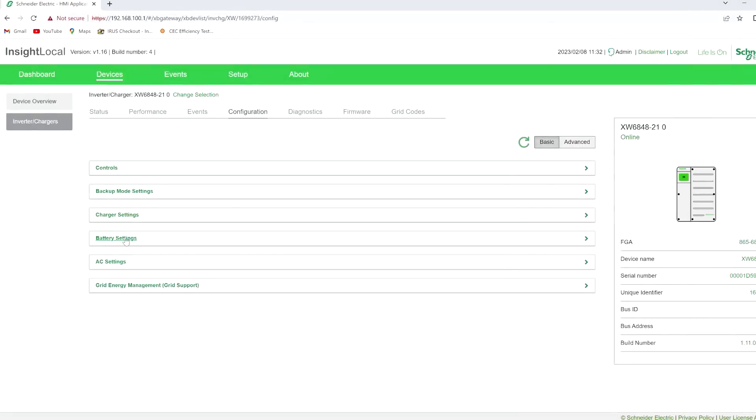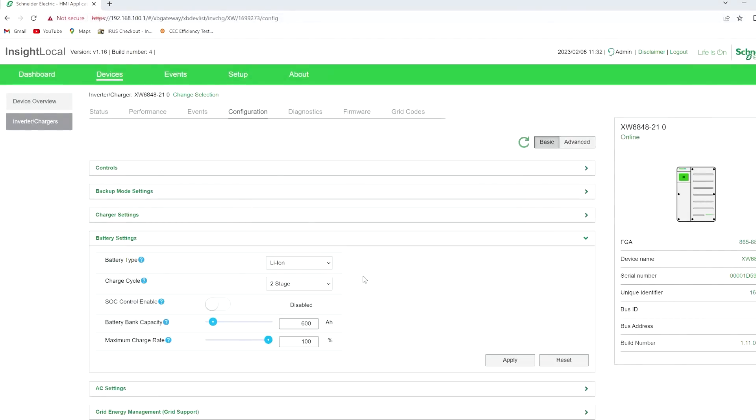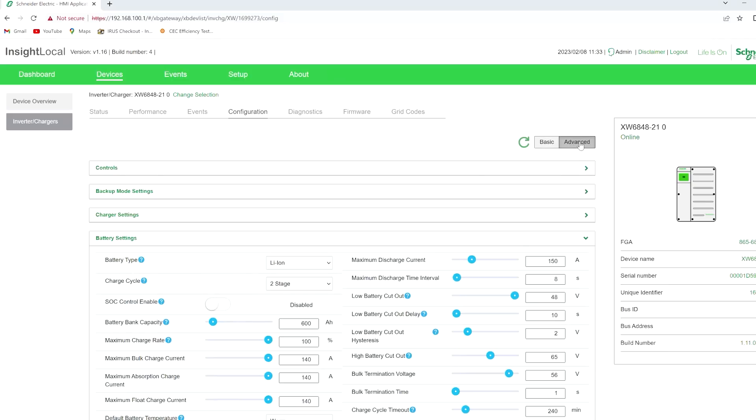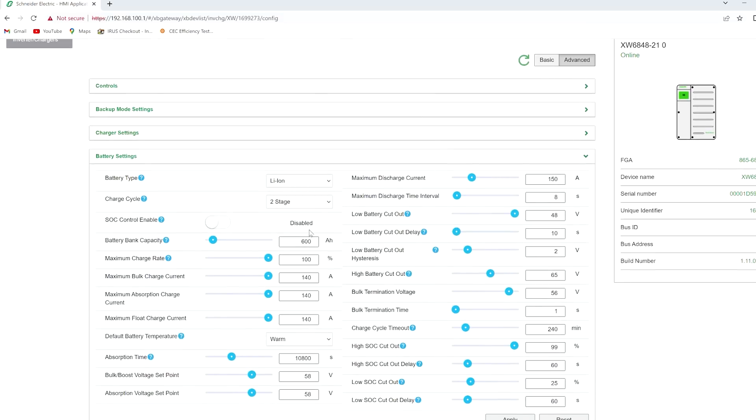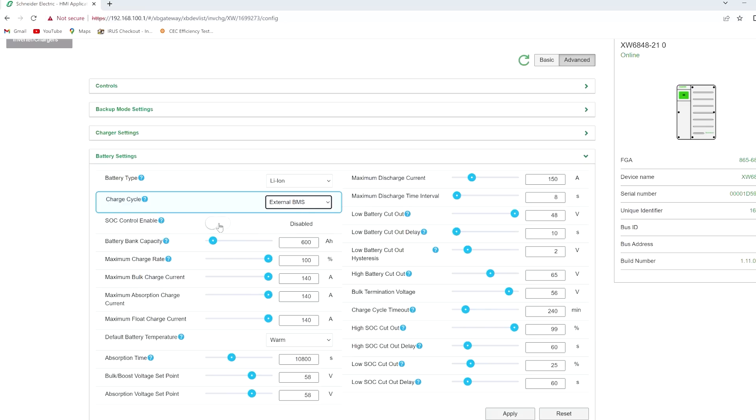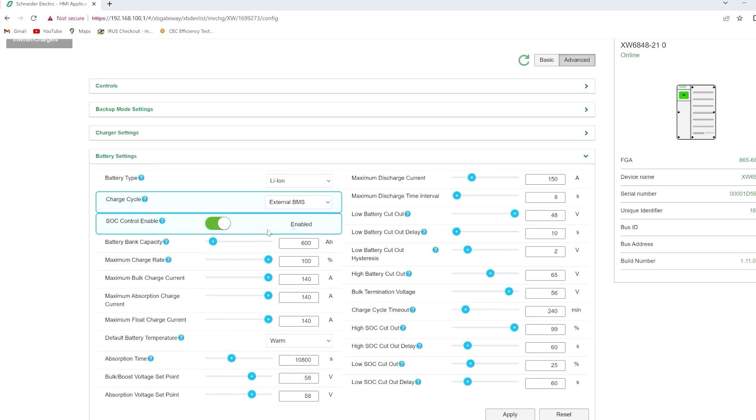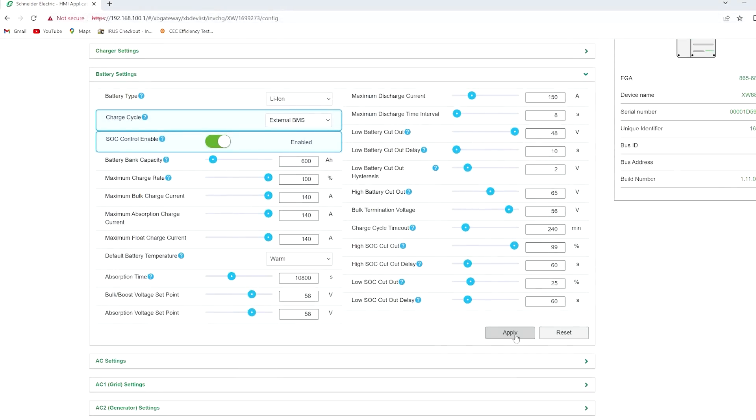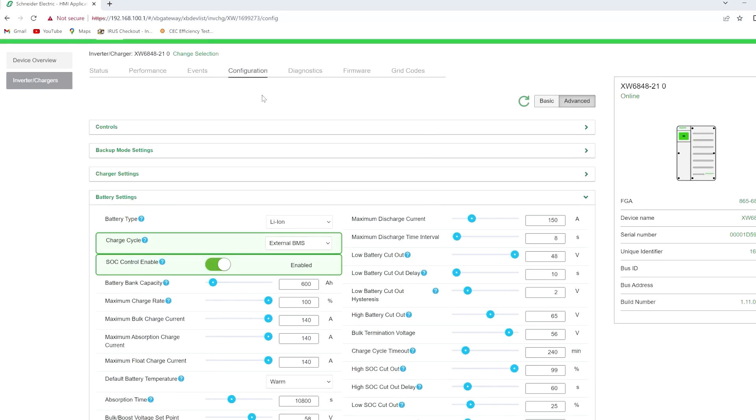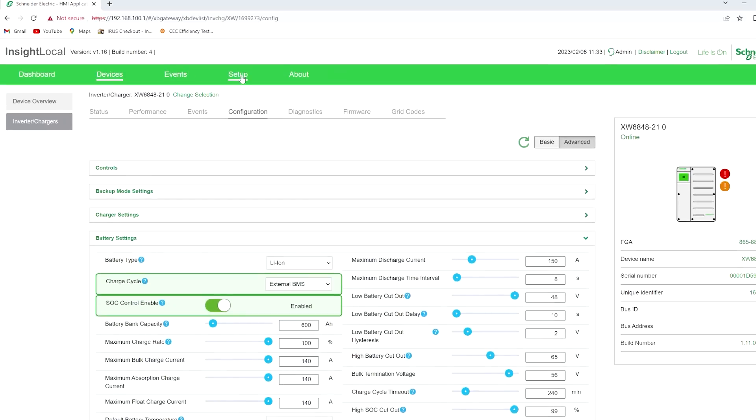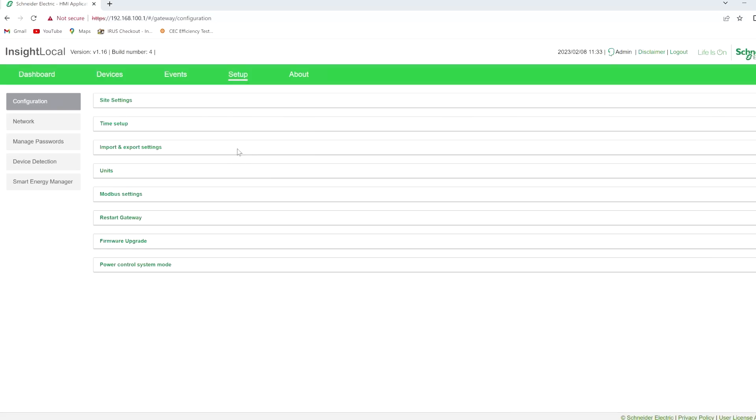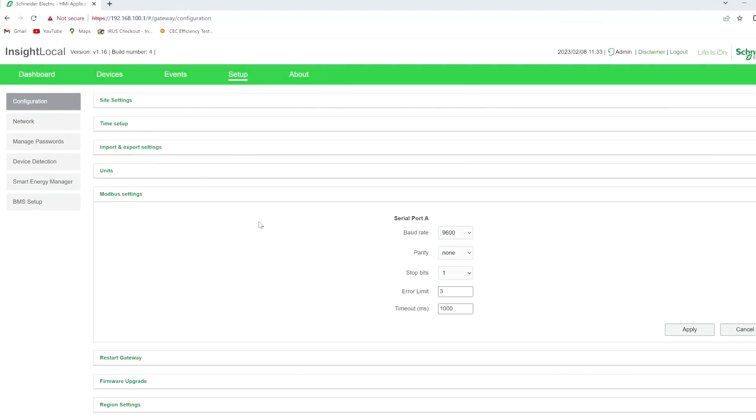We'll hit configuration. Now we need to set up the battery settings, but we don't have the ability to set up. I don't know if you can see this, but there's a drop down list and it says lithium ion, but it doesn't allow for the external BMS. So we'll click the advanced setting, and then over here we can click external BMS, and we'll enable the state of charge control. Hit apply.